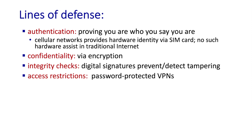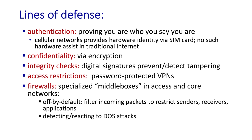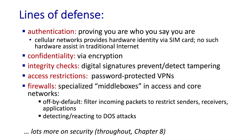On the UMass campus, for example, you authenticate yourself to the campus wireless network before using it. There are also specialized pieces of hardware known as firewalls that are programmed to detect and mitigate attacks. Firewalls sit in both edge and core networks and can be programmed to only allow certain users or certain types of traffic in or out of a network. We'll cover firewalls and other so-called middleboxes when we get to chapter four and study generalized forwarding.